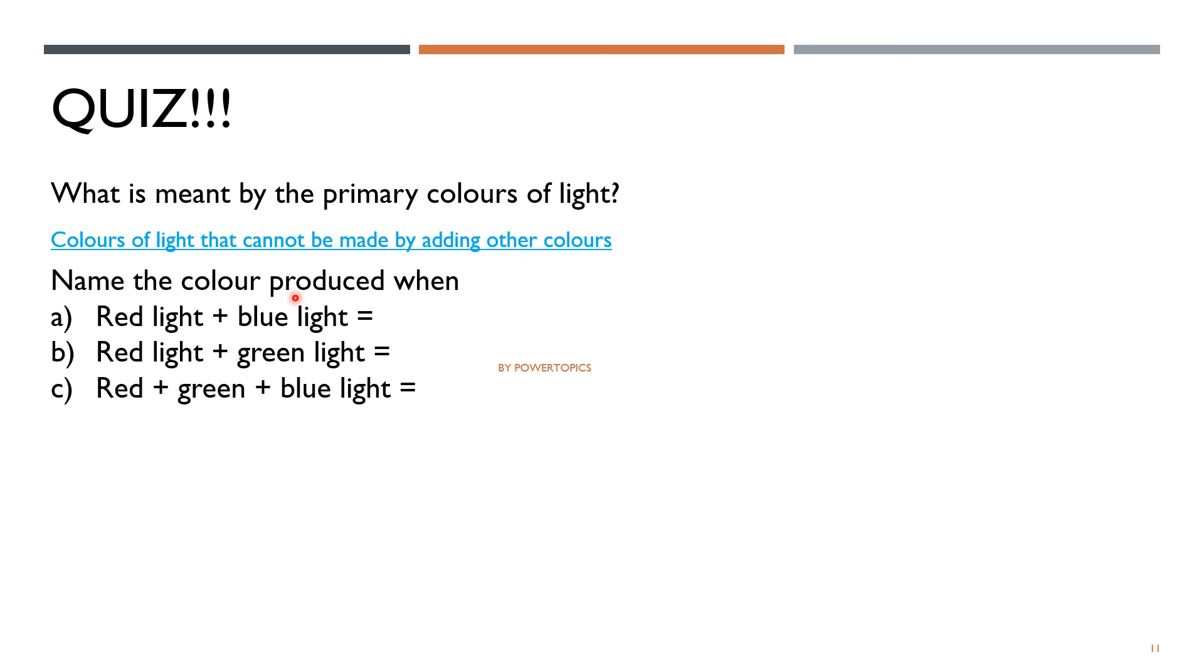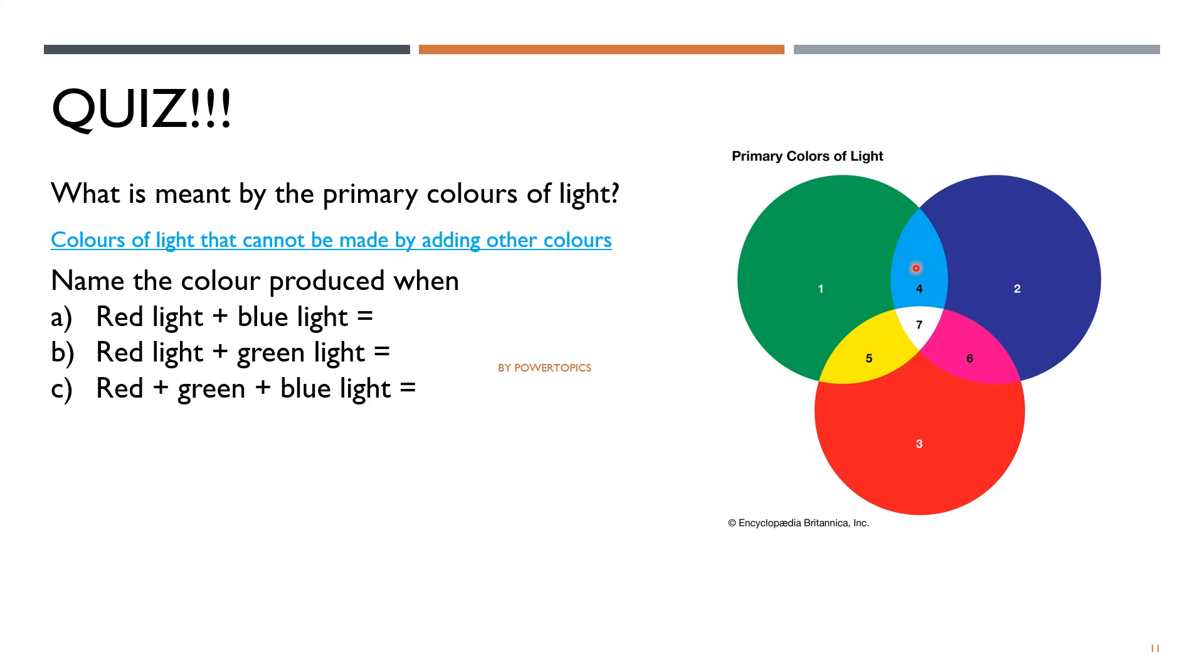Let us move to the second question. Name the color produced when red light is added to blue light and red light is added to green light, and all the primary colors when added together produce which light color. So for this one, you can refer to red light plus blue light is magenta. Red light plus green light is yellow. Red plus green plus blue light is white.